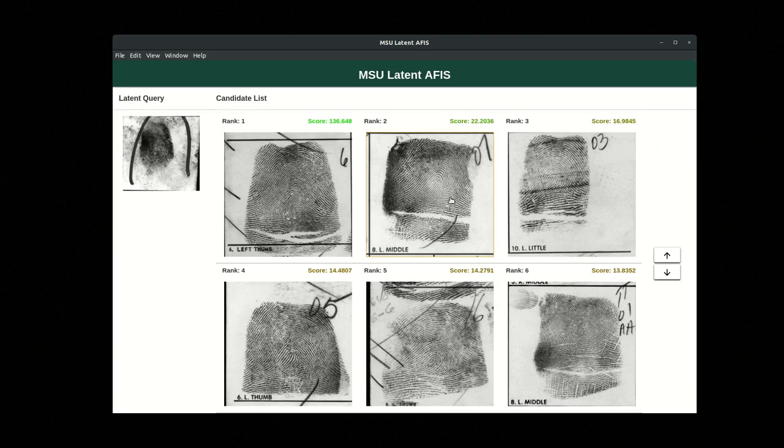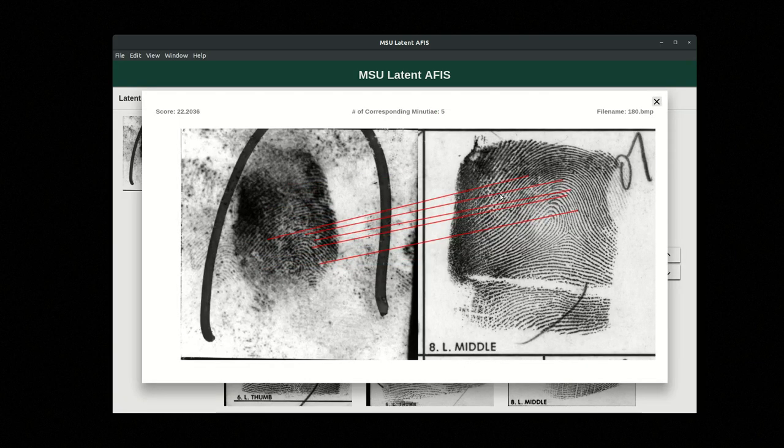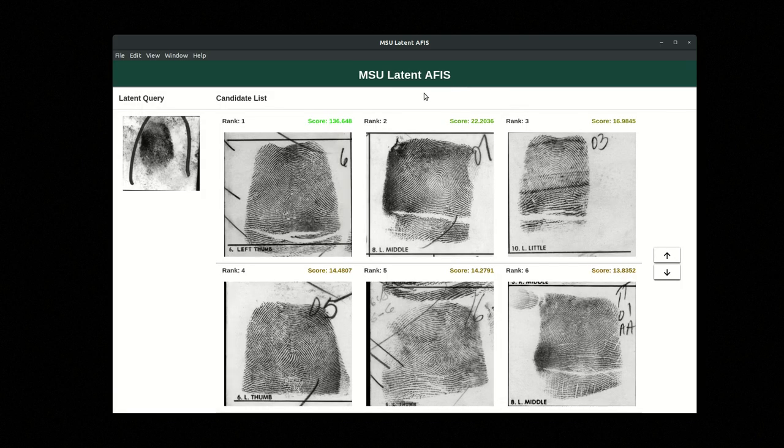We can check the rank two candidate as well. Obviously, this won't work nearly as well because they're not a true match, but the algorithm does its best to fit those together, and we can see it's a much smaller number of minutiae points in correspondence, so that makes sense.